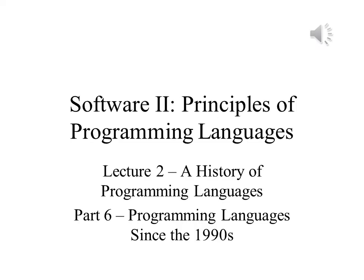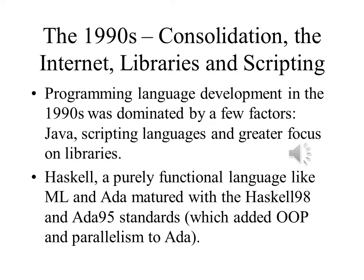In part six of this lecture, we will discuss the programming languages that first appeared from 1990 to the present. The 1990s were dominated by a few factors, and possibly the most significant of these factors was the growth of the Internet. When Bill Clinton became president, he pushed for the National Information Superhighway Infrastructure Act, which led to the commercial growth of the Internet.